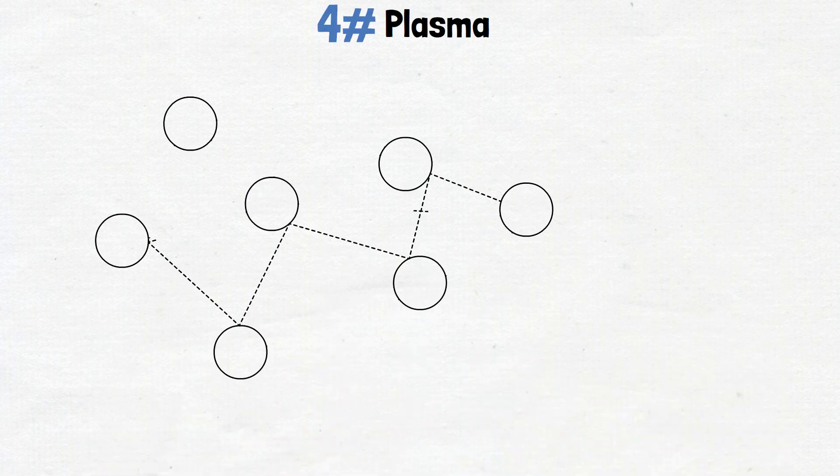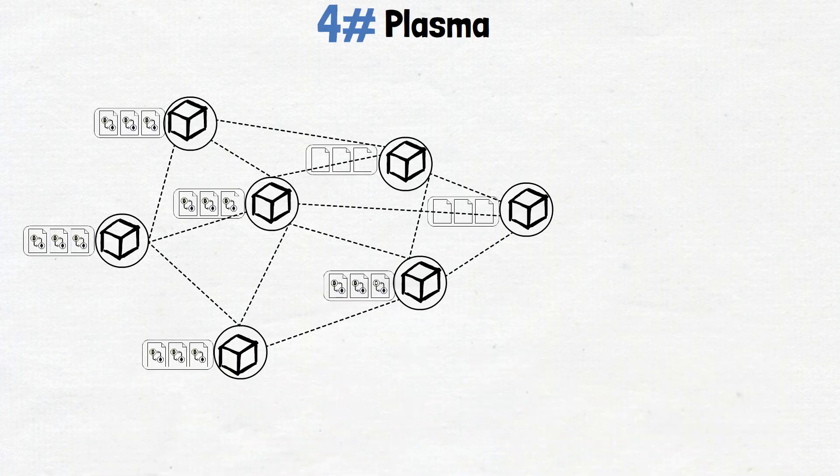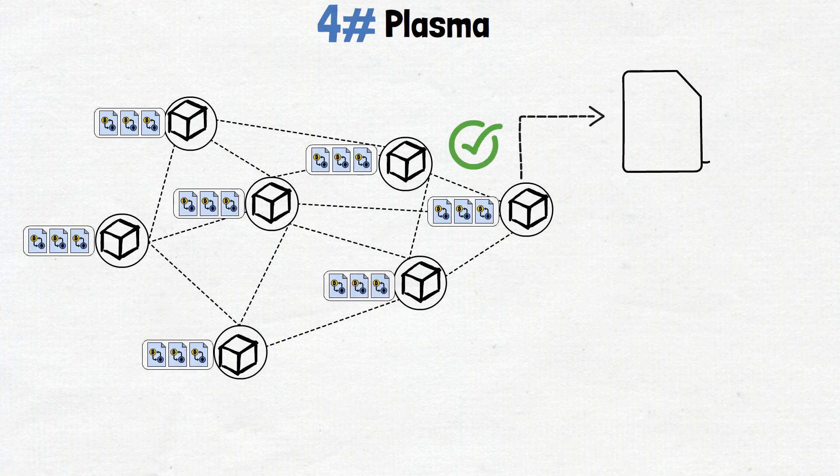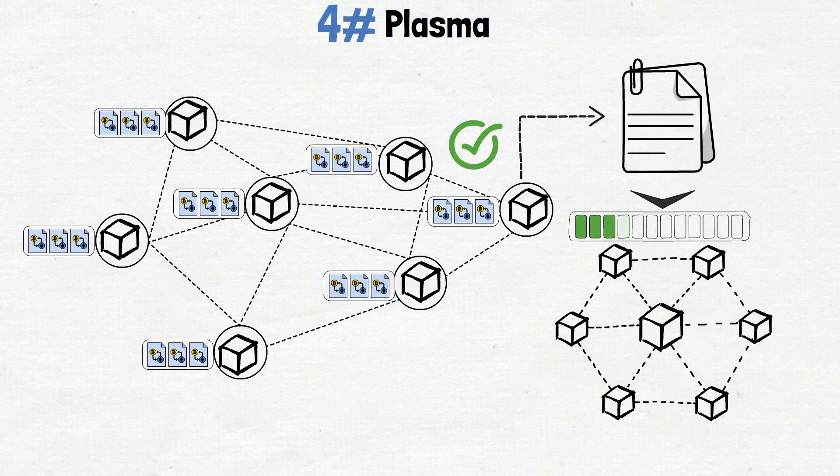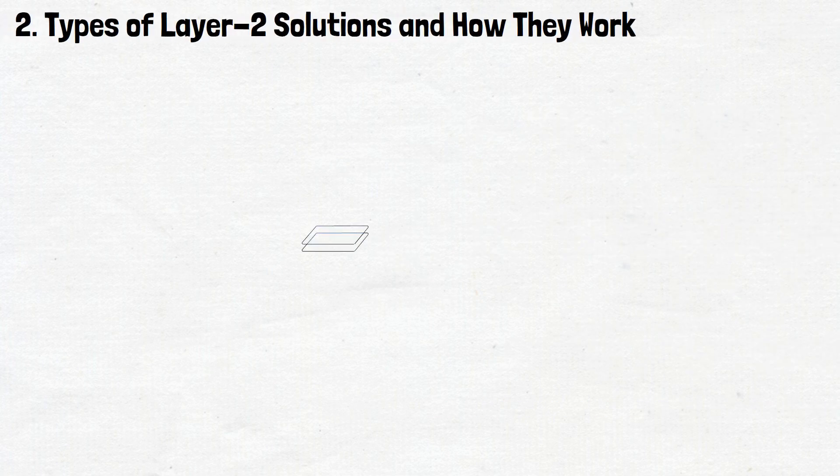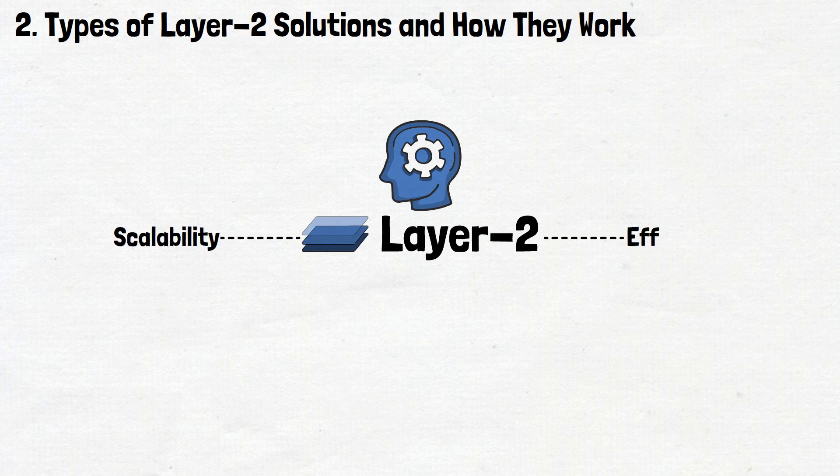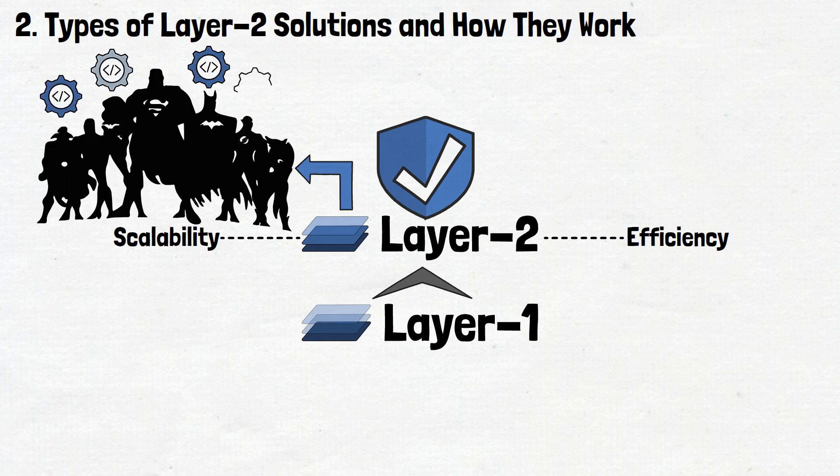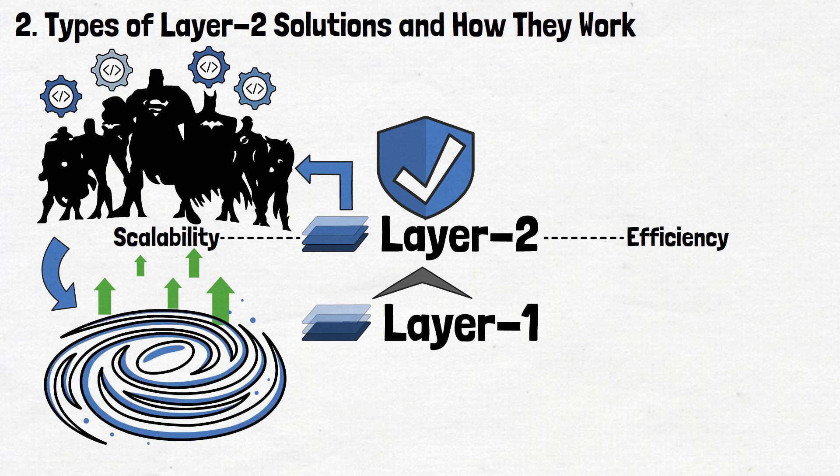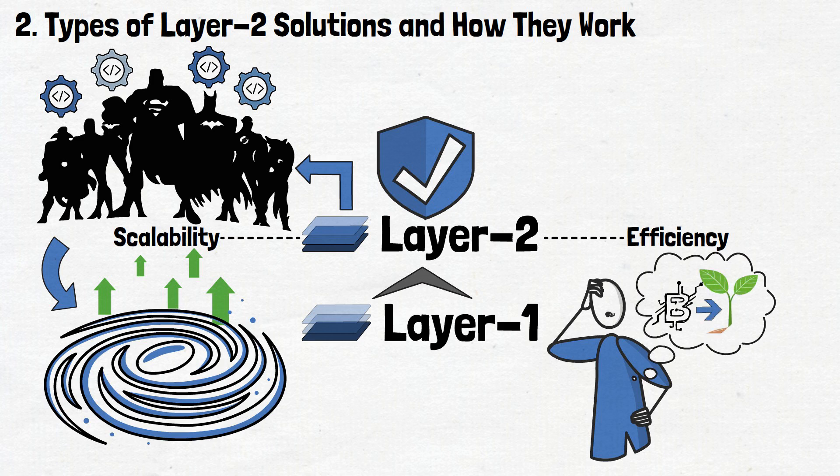Lastly, we have Plasma. This is like a network of interconnected mini-blockchains, each handling its own set of transactions. Once transactions are completed within these mini-blockchains, they submit a summarized version of the data to the primary chain, reducing the overall load and ensuring the security and integrity of the Layer 1 network. These Layer 2 solutions, in their diverse and innovative ways, address the scalability and efficiency challenges faced by Layer 1 without compromising security. They're akin to a league of superheroes, each equipped with unique abilities to streamline and optimize the crypto universe. Knowing how these solutions work really gets you thinking about how innovative blockchain tech has been evolving, doesn't it?